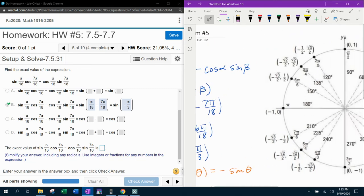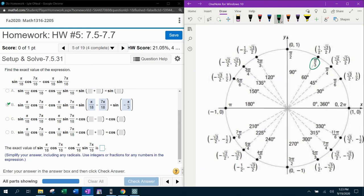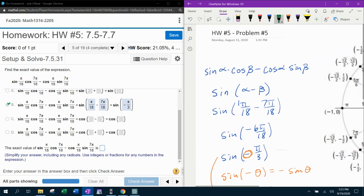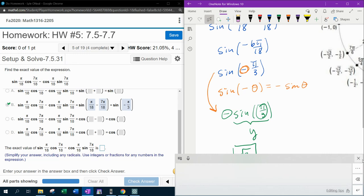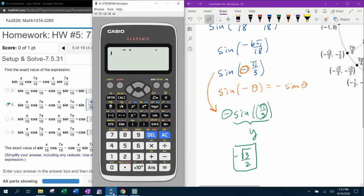Pi over 3, y-coordinate, change the sign. That's going to be negative square root of 3 over 2. Should be my final answer. Now, let's check this electronically with the calculator. And I'm going to put in the original problem just the way it looked.